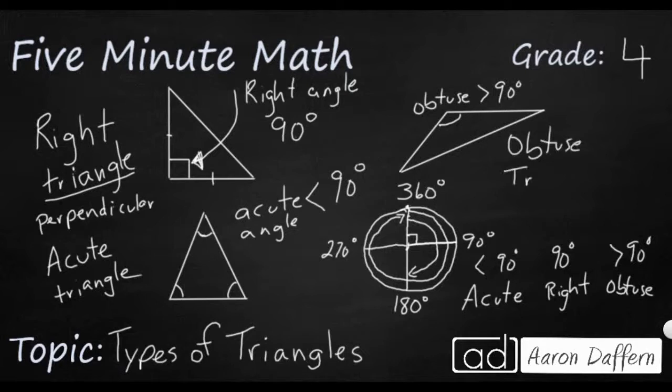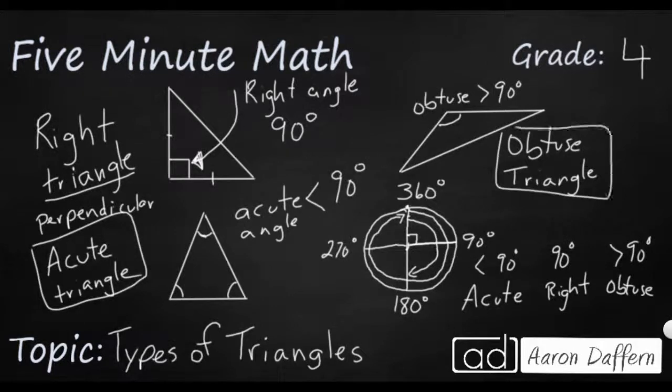So one way to name these triangles is by the name of their largest angle. So if you have a perpendicular 90 degree angle, it's a right angle, right triangle. If you have all three angles that are smaller than that 90 degrees, it's going to be an acute triangle. And then if you have a big fat angle, it's going to be an obtuse triangle.